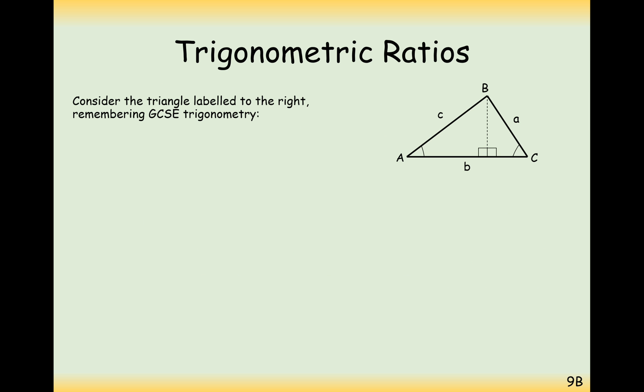So what we're going to do to work out how we can form the sine rule is first take a carefully labelled triangle and create a perpendicular down the centre of it. And what we're going to be considering is what the height of this dotted line is using the sine values from these two angles here at C and at A over here.